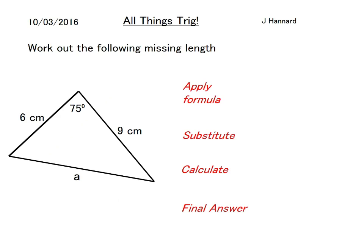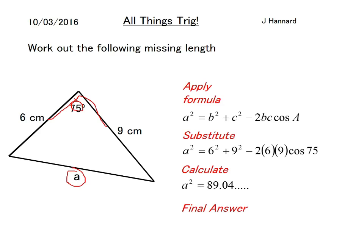As you can see, I can make a scissor with this. I've got an angle trapped between two sides and I want to find this side. So a squared equals b squared plus c squared minus 2bc cos A. Substitute your numbers in. Calculate so you get a squared equals 89.04 something. Your final answer for a would be the square root of that, which is about 9.4 centimeters.